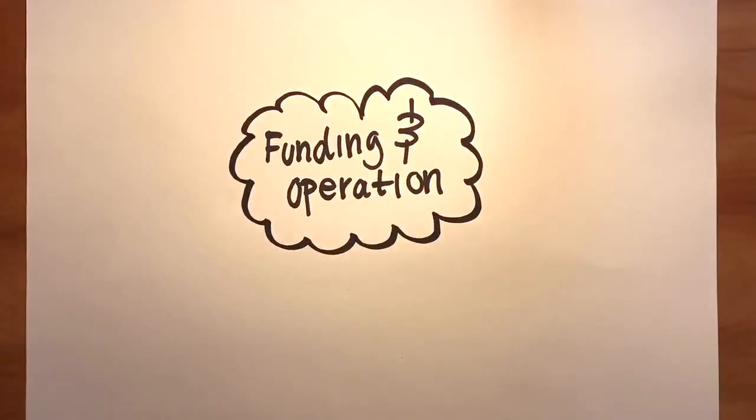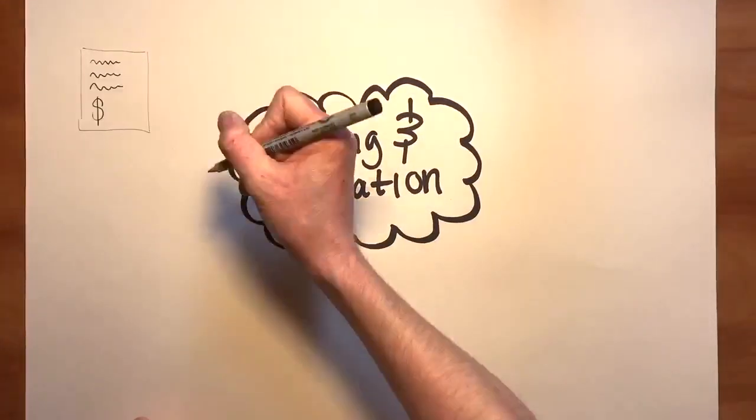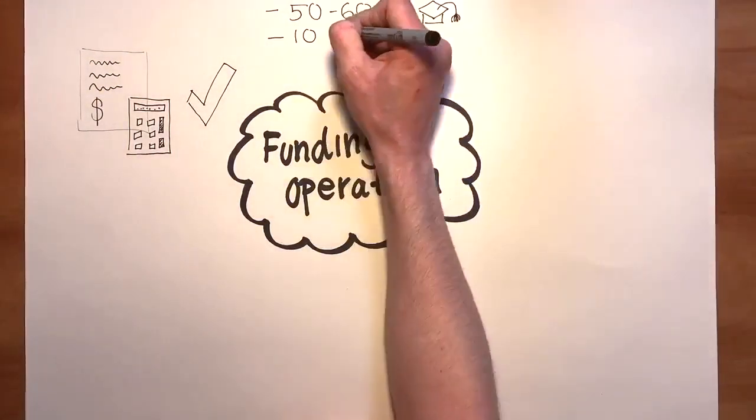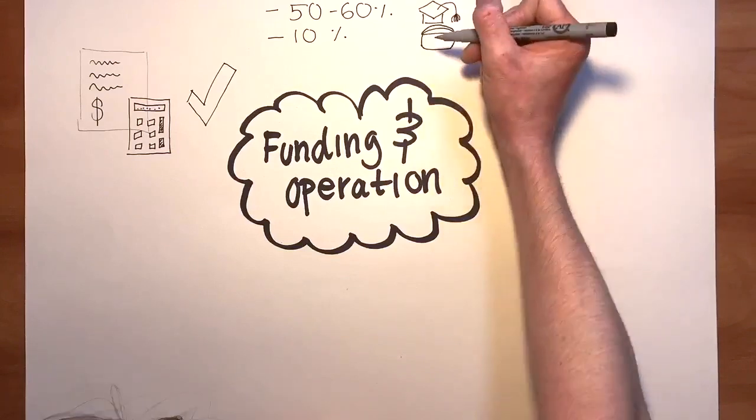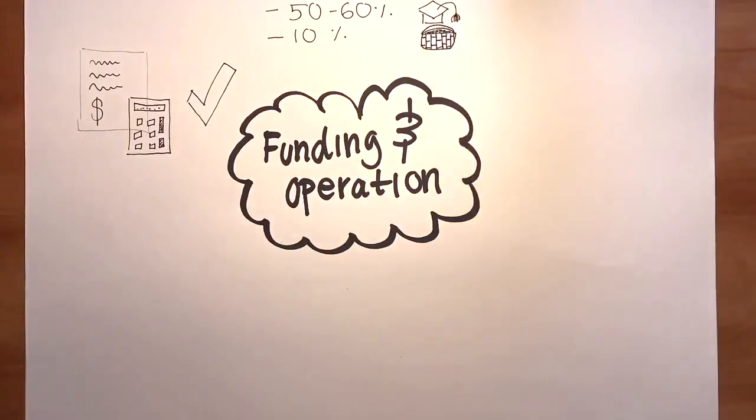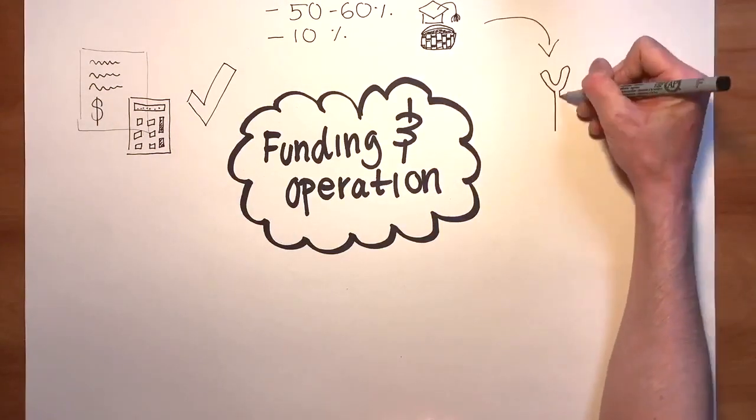All of our expenses are accounted for in our budgeting that's approved by our board of directors. We have about 50 to 60% of our annual budget comes directly from students. And then in addition to that, we fundraise 10% of our annual budget through our funding drive.